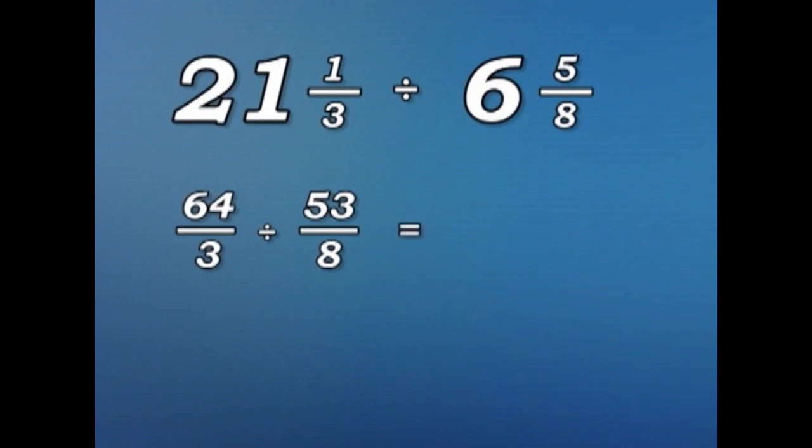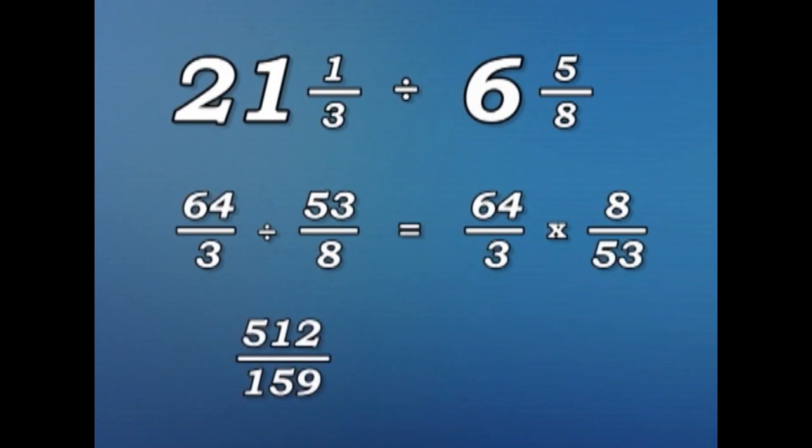So, 64 over three divided by 53 over eight becomes 64 over three multiplied by eight over 53, which is the same as 512 over 159, which is 3 and 35 hundred and fifty ninths. Not far off our estimate.